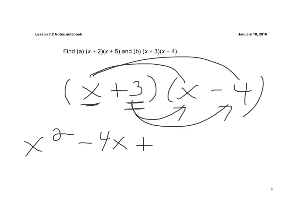So 3 times X is plus 3X, and 3 times negative 4 is negative 12. And again, we combine our like terms. So I get X squared minus X minus 12. And that's one of the methods we'd like you to use. It's just the double distribute, because we can expand that to more types of multiplying polynomials.